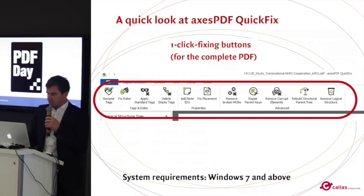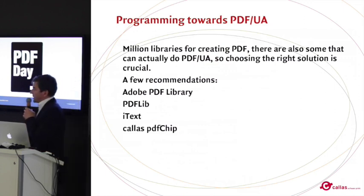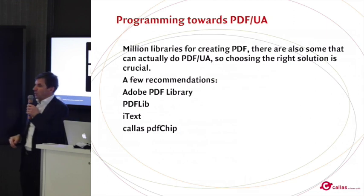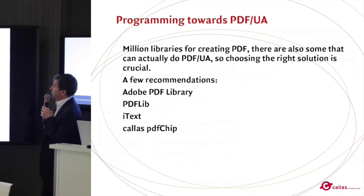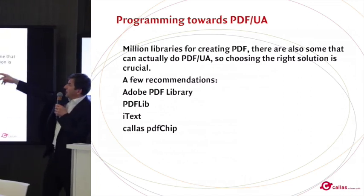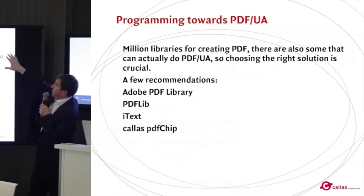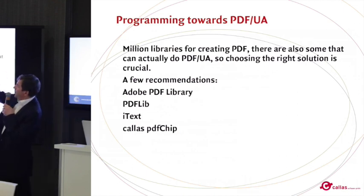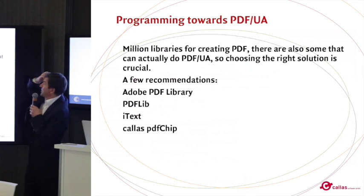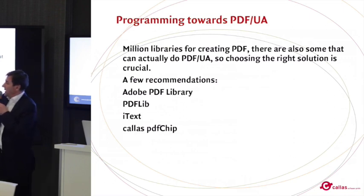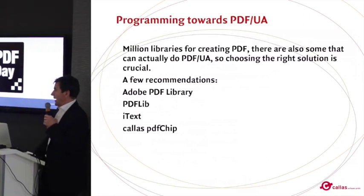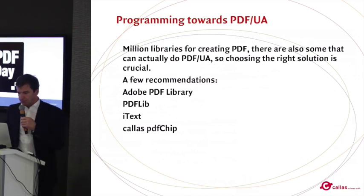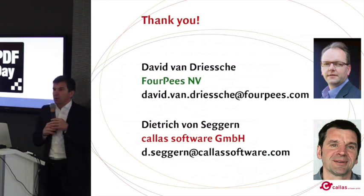If you want to program toward PDF UA — for example, generating PDFs from a database — many libraries exist for general PDF creation. But for creating PDF UA with structure and tagging information specifically, only a few tools support this: the Adobe PDF Library, PDF Lib, iText, and also PDF Chip, which was a forthcoming solution at the time of this presentation.